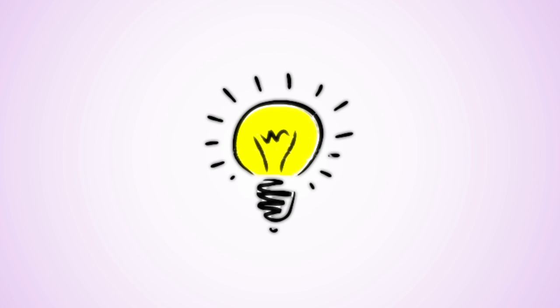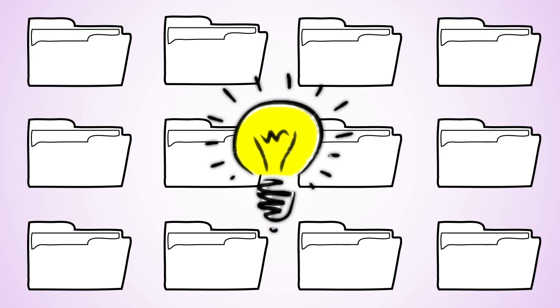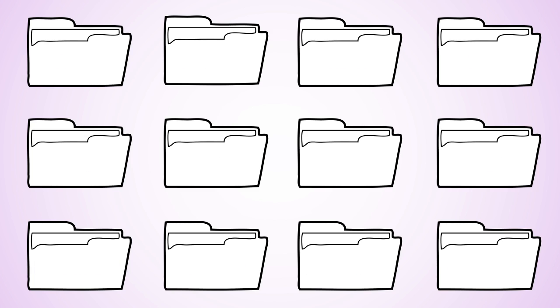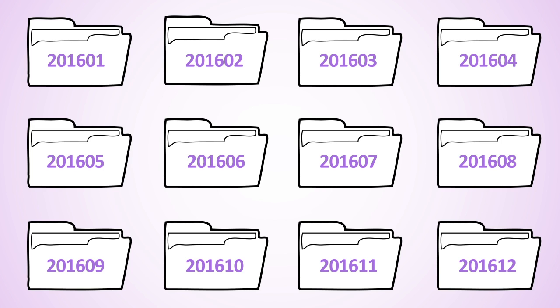One idea that probably immediately comes to mind is to have a separate folder for each month. You could simply title them January, February, and so on, but you may want to consider naming them numerically in case this becomes an annual project. In that case, you would name folders 2016-01 for January, 2016-02 for February, and so on.